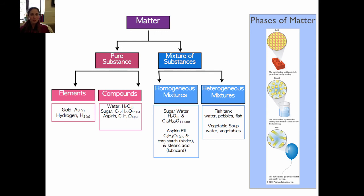Before I go on, I want to point out what the little subscripts mean after chemical formulas. If you have water with a little L afterwards, that means liquid water. An S means solid, a G means gas, and AQ is a special type — something dissolved in water, meaning aqueous, which is specifically a water solution. Also notice that chemical formulas have symbols followed by little numbers. The little number tells you the count of the atom that comes right before it. In the formula for sugar, you have 12 carbons, 22 hydrogens, and 11 oxygens. In water, you have two hydrogens and one oxygen.